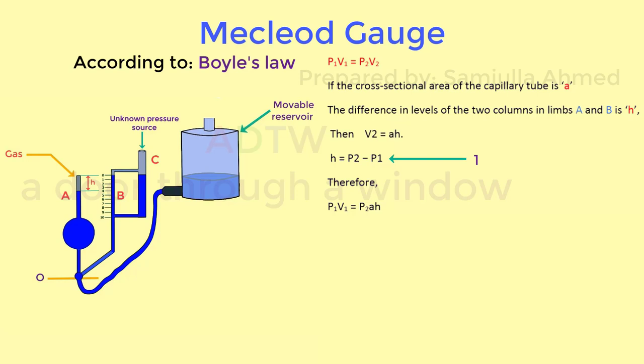Therefore P1 V1 will be equal to P2 AH. Then this equation can be rewritten as P1 V1 is equal to H plus P1 into AH.